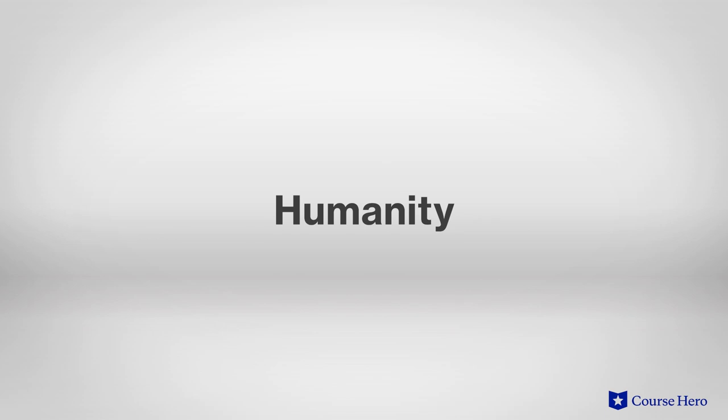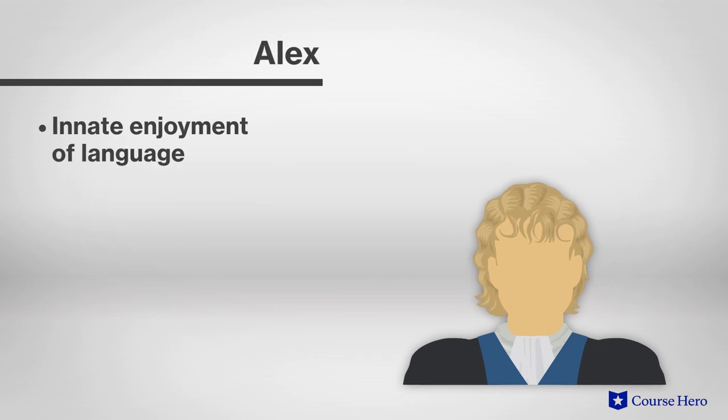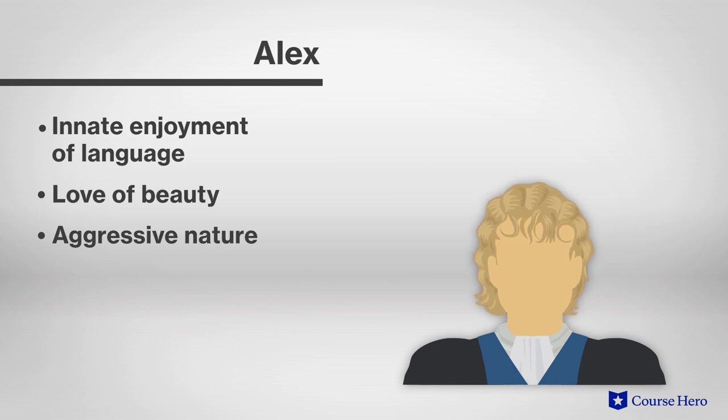In a way, Alex becomes a representative of humanity under assault from institutional forces, particularly the state. Alex, as Burgess writes, is perhaps over-endowed with three essential human traits. An innate enjoyment of language, a love of beauty, and an aggressive nature, symbolic of Freud's concept of the id, the ego, and the superego, the first and third of which are at play in Alex. Alex's experiences chronicle the struggle of an individual to maintain human identity, regardless of the state's desires and demands.